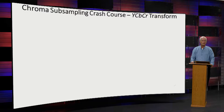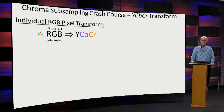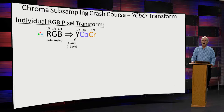Individual RGB pixels are transformed into another form. One third of the bits describing a pixel are for red, one third for green, one third for blue. It gets transformed into something called YCbCr. The Y value — the luma channel — is one third of the bits; CB is one third; CR is one third as well. Think of the chroma CB and CR as watercolors that you would put on a black and white image to make it a color image.